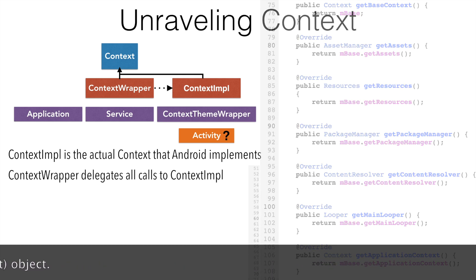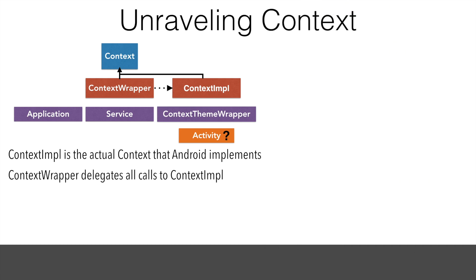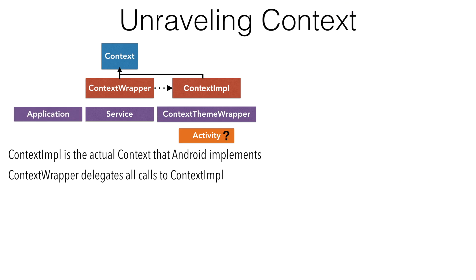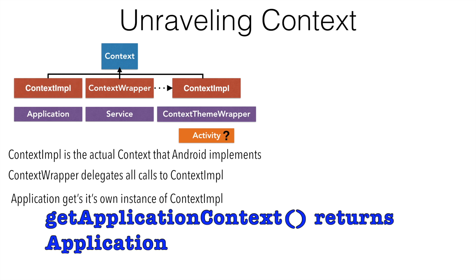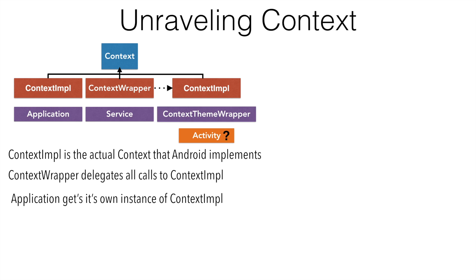Having understood this, when the application gets created, Android gives an implementation of context for the application. And since the application is a singleton, there can be only one context implementation for the application object.